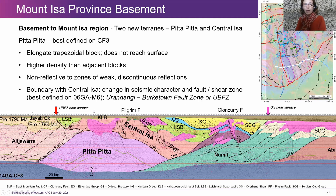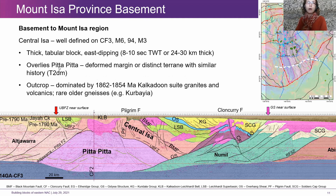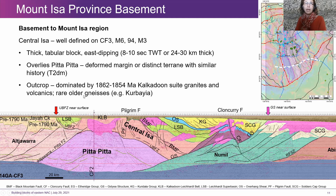The Central Isa terrain is an elongate tabular block, dipping to the east, eight to ten seconds thick in two-way time — so 24 to 30 kilometers. It overlies Pitta Pitta. It could represent the same terrain that was just more deformed, or it could be a distinct terrain with a similar history. What we know from the neodymium model ages is that these two blocks show similar ages. In outcrop, the Kalkadoon suite granites and volcanics are quite voluminous and form that big north–south belt. We see rare evidence of older gneisses. So we have the Kalkadoon belt intruding Central Isa and Pitta Pitta.